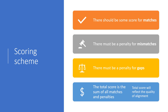Using the scoring scheme of plus one for every match and minus one for every mismatch, and ignoring gaps for this example, we calculate the score for both alignments. Alignment one has a final score of one, whereas alignment two has a score of three. So out of these two alignments, we prefer alignment two because it has the maximum score.